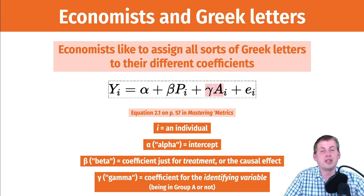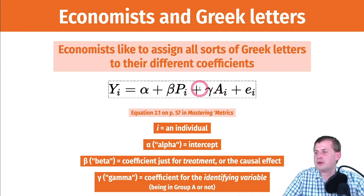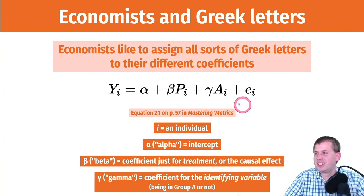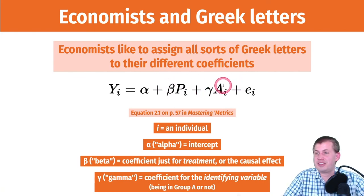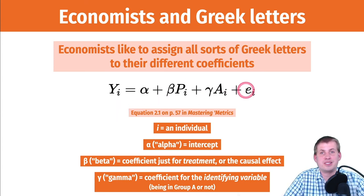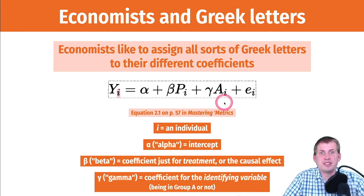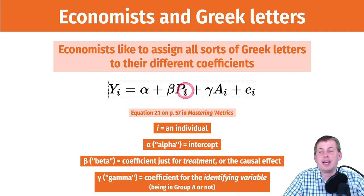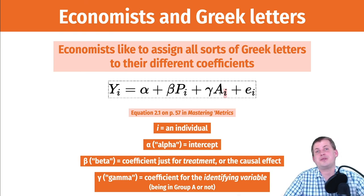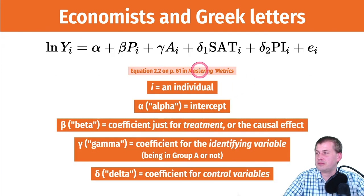Gamma here is the identifying variable — like whether someone was in a treatment group or control group. Rather than calling it beta-2, they call it gamma. Beta is the effect you care about; gamma is the identifying variable. You'll also see subscripted i, which just means it's for an individual in the data set. You can generally ignore the i for the purposes of this class.